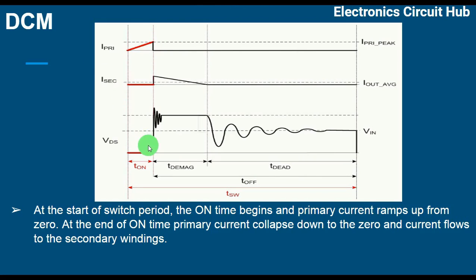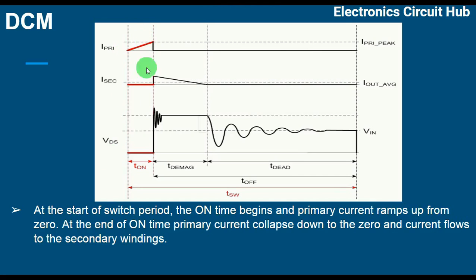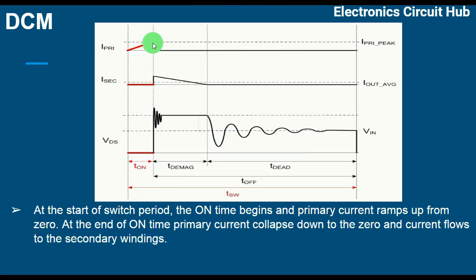At the start of the switch period, the on time begins and the primary current ramps up from zero — you can see that here in red, this is T-on in red. At the end of on time, the primary current reaches its peak value, shown here as I-primary peak.